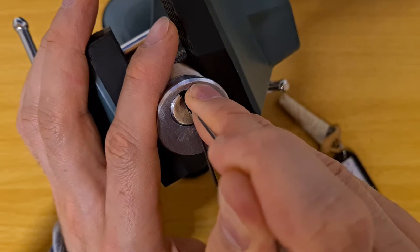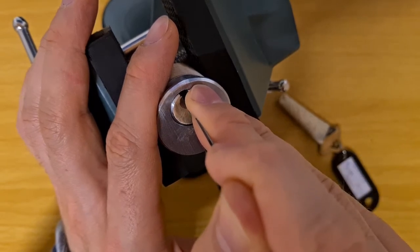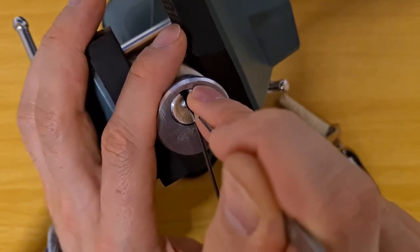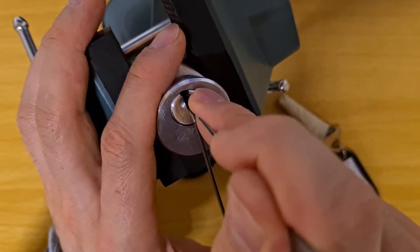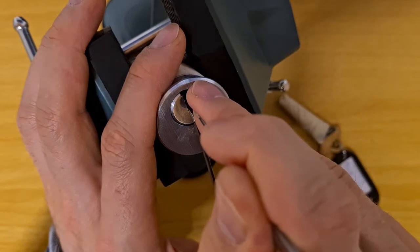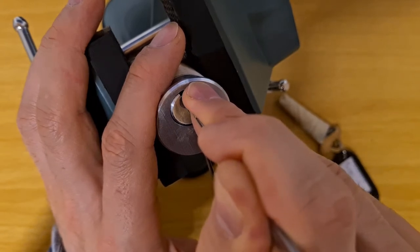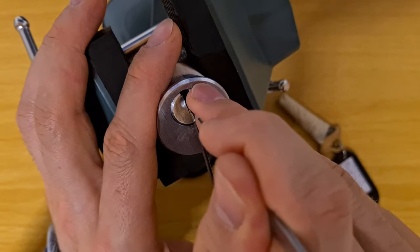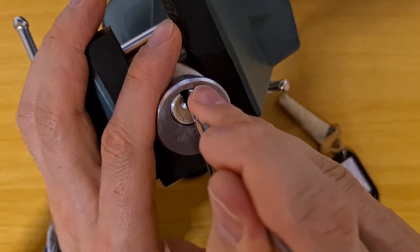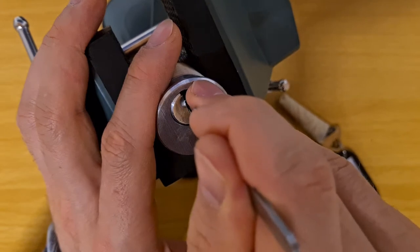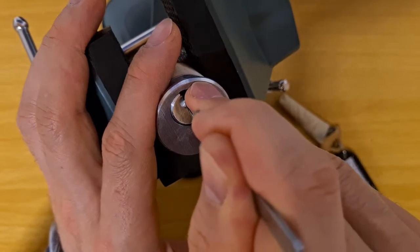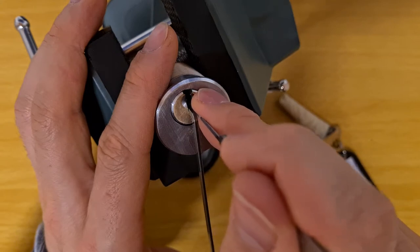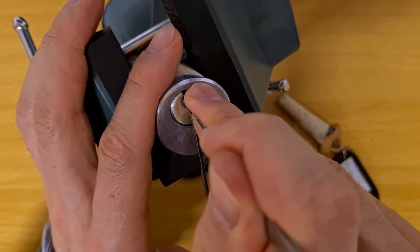It feels like binding order also changes every time I pick it, so they might be not quite uniform, those pins. Number one set, number two set, three. Lose something else binding, four feels all right, five feels all right and what about six. Deep false set.